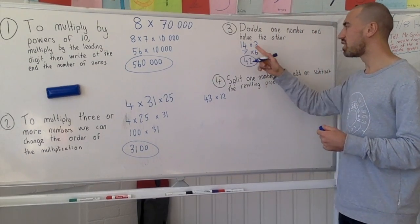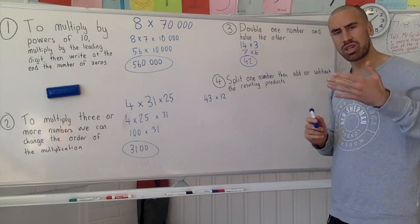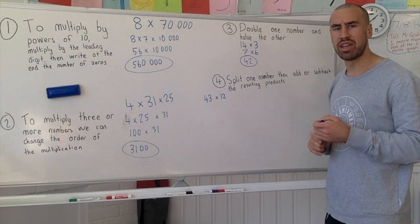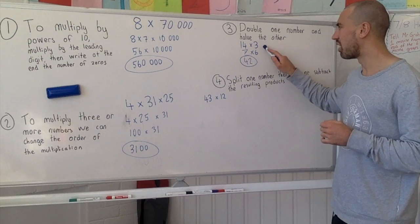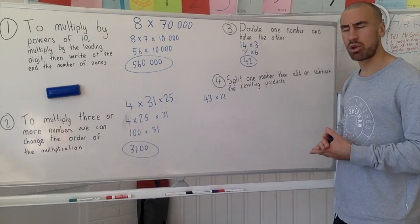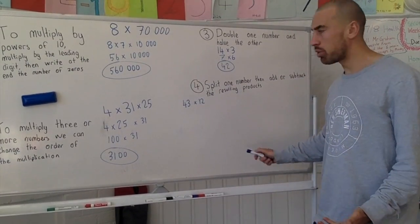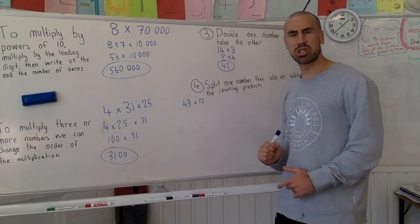So strategy number three, doubling one number and halving the other. Obviously you're looking for your odds and your even numbers there, because you can't, well you could have that but we'll give you 1.5, it's a lot easier to multiply with whole numbers. Alright, strategy number four. The problem we're trying to tackle is 43 times 12.